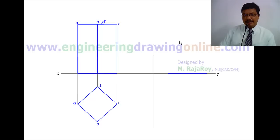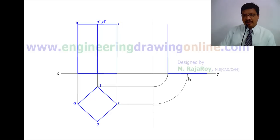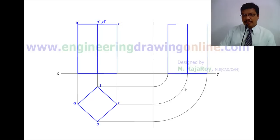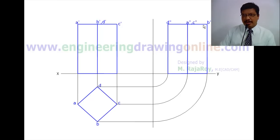Now take a profile plane and project the side view. From the top view draw the arc and projectors to get the side view. When viewing from the side, the D point comes at D double dash. Behind point A we get C, so here we get A double dash and C double dash together. Point B double dash is on the other side.